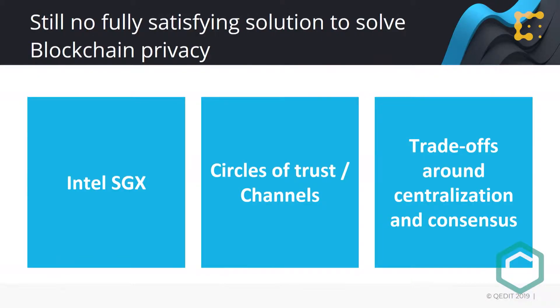The big problem is there's no satisfying solutions out there right now. There's something called Intel SGX, which you've probably heard of. This takes your chip and dedicates a part of it to doing calculations that are out of reach for you — Intel signs all those calculations in an encrypted form. So you're trusting that the hardware is functioning correctly.